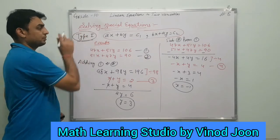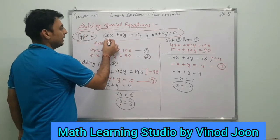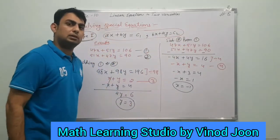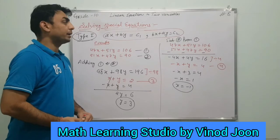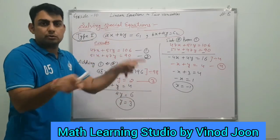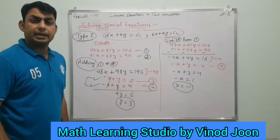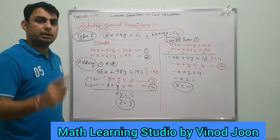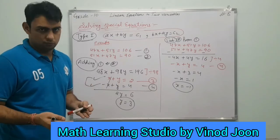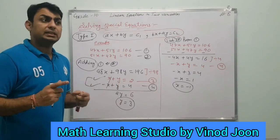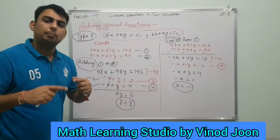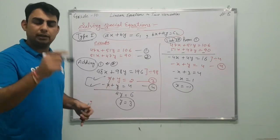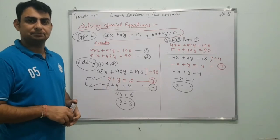So this was our Type 1 of special equations, where ax + by equals a constant, and bx + ay equals another constant. That means the x and y coefficients are interchanged in both equations. In the next practice, you will get two questions based on this kind of equations. Solve them, then we will take Type 2 equations, where the equations are not linear but we can make them linear. So first try two questions of this type and then move on.